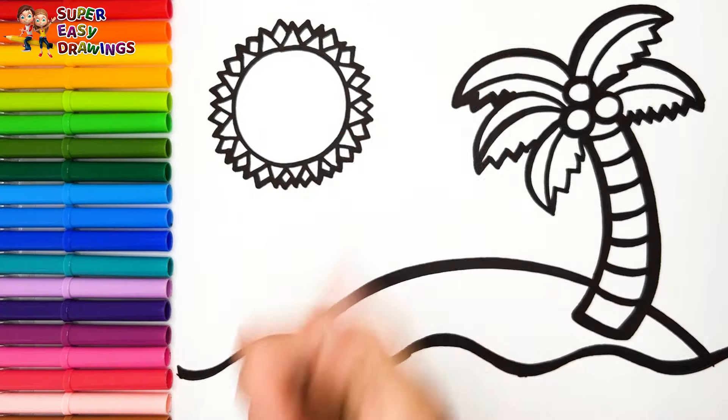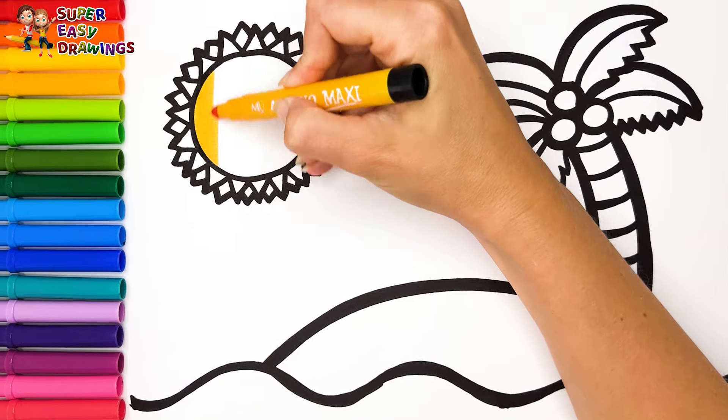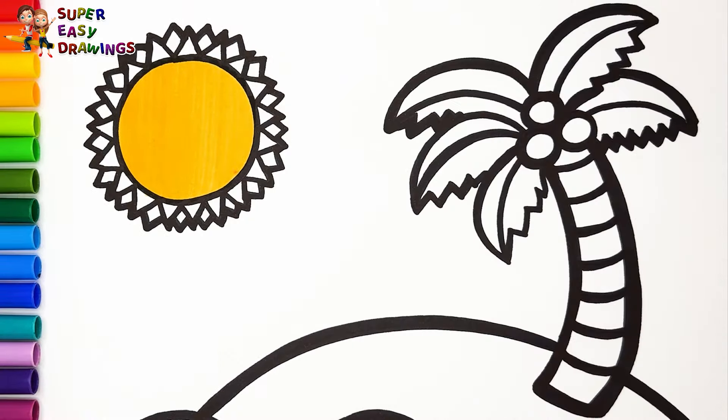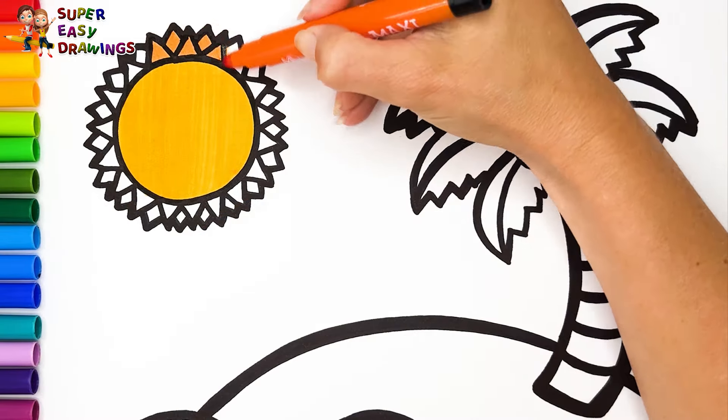Let's start coloring. At first I'm going to color the sun. I use yellow for the middle. Then orange around the circle.